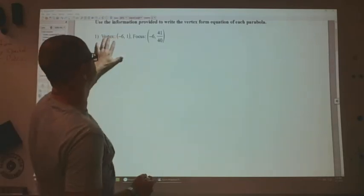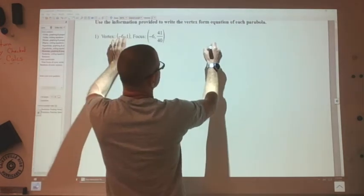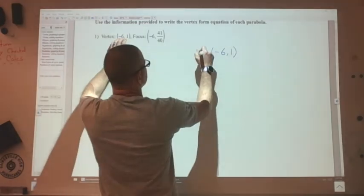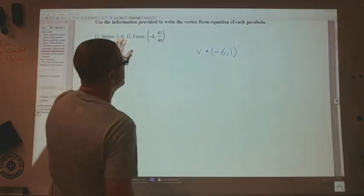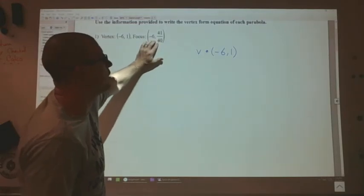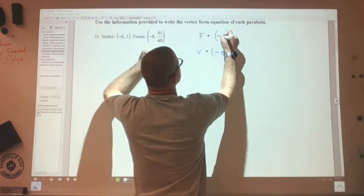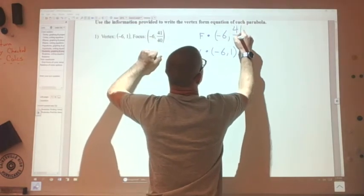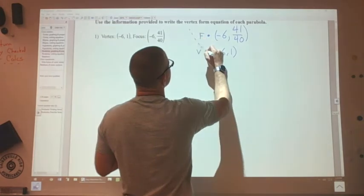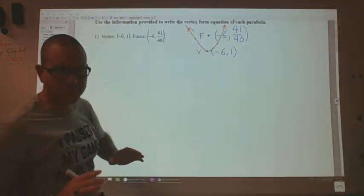So the vertex is my center. But we have a vertex at negative 6, 1. So let's say that's that point. Negative 6, 1. There's our vertex. And then the focal point, the focus, is at negative 6 and 41 over 40, which is up here. Which means this particular parabola opens up. You kind of see that there. It's not my best parabola, but that's okay.